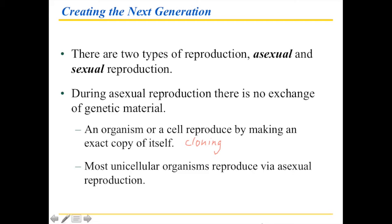There are many unicellular organisms that reproduce via asexual reproduction, but there are also some we know quite well. For example, strawberry plants send out runners that take root and form another strawberry plant — this is the mother plant producing a daughter plant through asexual reproduction. You also see this with various grasses. There are also lizards and frogs that go through asexual reproduction.